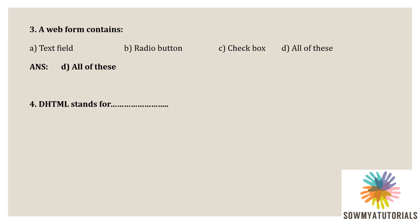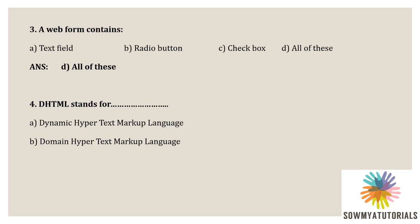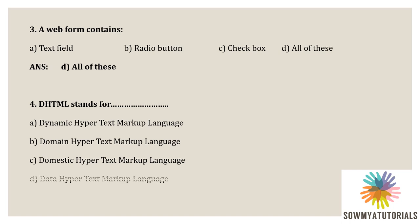DHTML stands for what? Option A: Dynamic Hypertext Markup Language. Option B: Domain Hypertext Markup Language. Option C: Domestic Hypertext Markup Language. Option D: Data Hypertext Markup Language. The correct option is Option A — DHTML stands for Dynamic Hypertext Markup Language. We already know the HTML expansion, so D stands for Dynamic.